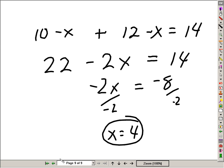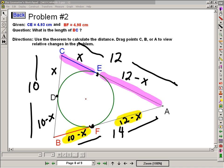If x is 4, go back to the problem. What do we know? If this much is 4, then this much must be 10 minus 4, 6.